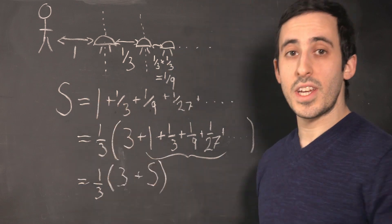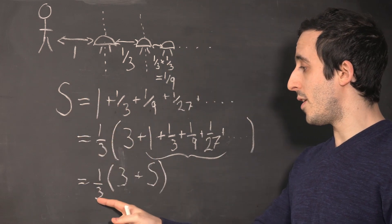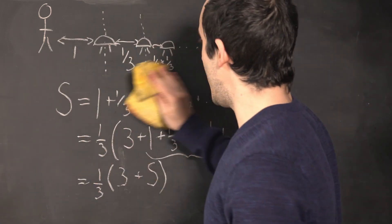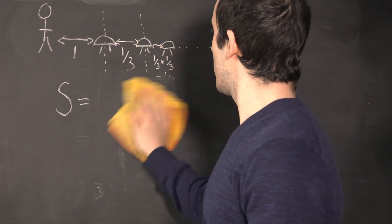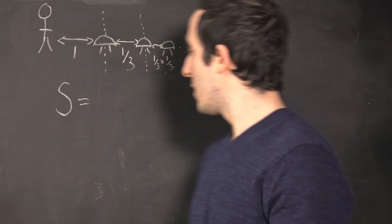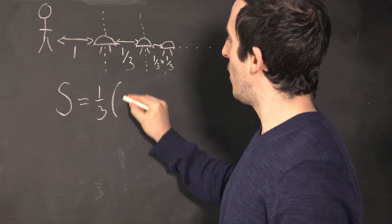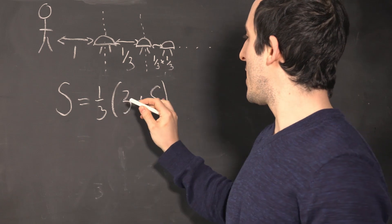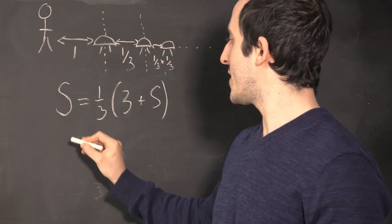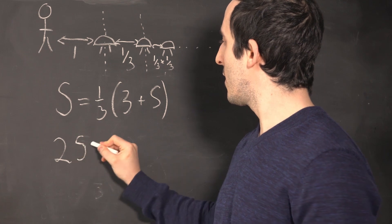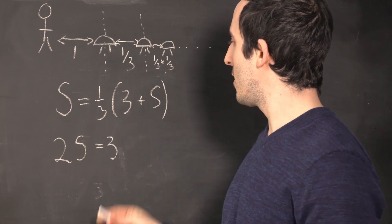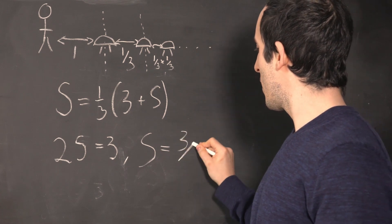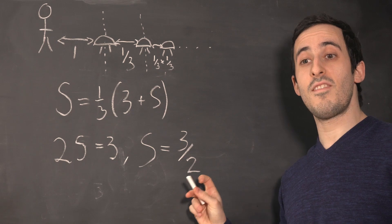And now we have an equation we can solve, right? We have S is equal to a third of three plus S. And let's solve that. So this is a third of three plus S. I'm going to times both sides by three, and then I'm going to minus this S from this side. So we end up with two S is equal to three, or S is equal to three over two, or 1.5 metres.